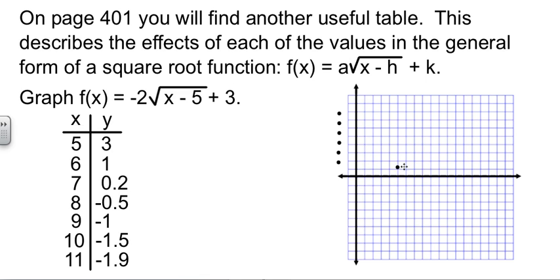5, 3. 6 gave me 1. 7 gave me 0.2. 8 gave me negative 0.5. 9 gave me negative 1. 10 gave me negative 1.5. 11 gave me negative 1.9. All I'm doing is putting these points where the table tells me to.